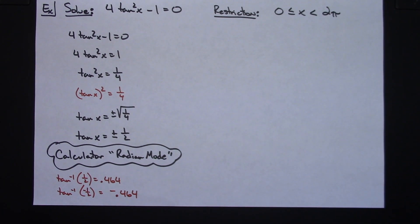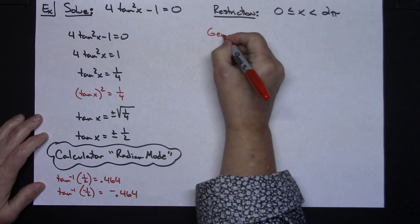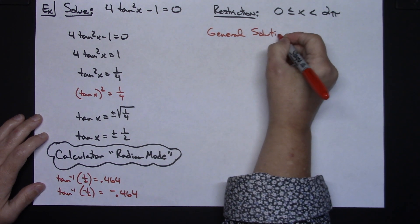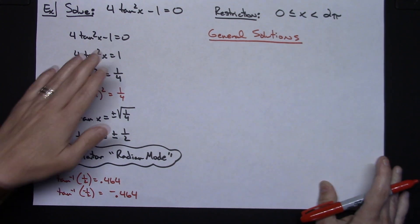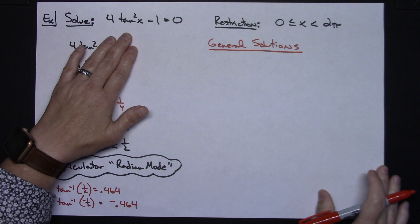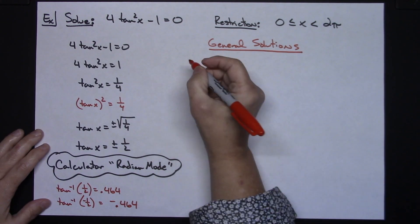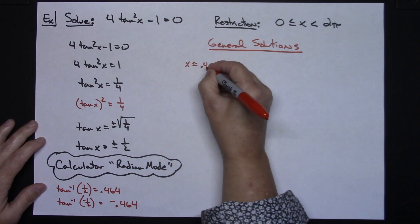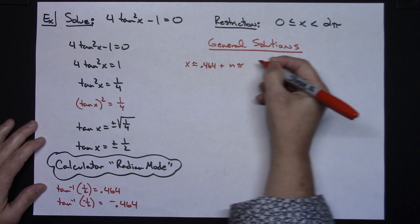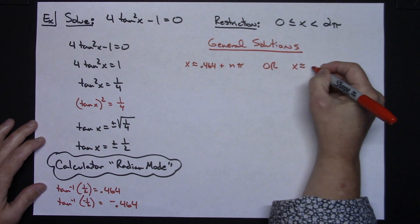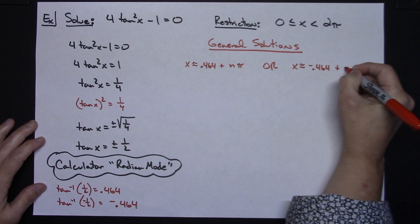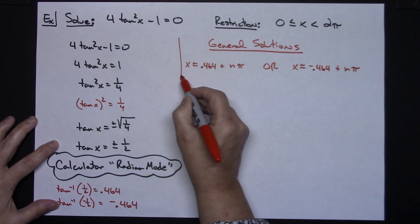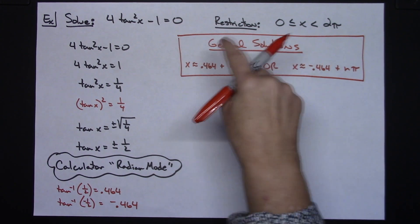Now let's write the general solutions — this will help us find the specific answers in the interval. Since this is a tangent function with period π, we add nπ. So: x ≈ 0.464 + nπ, or x ≈ −0.464 + nπ, where n is any integer. Box those general solutions — we'll use them to find which specific values fall between 0 and 2π.